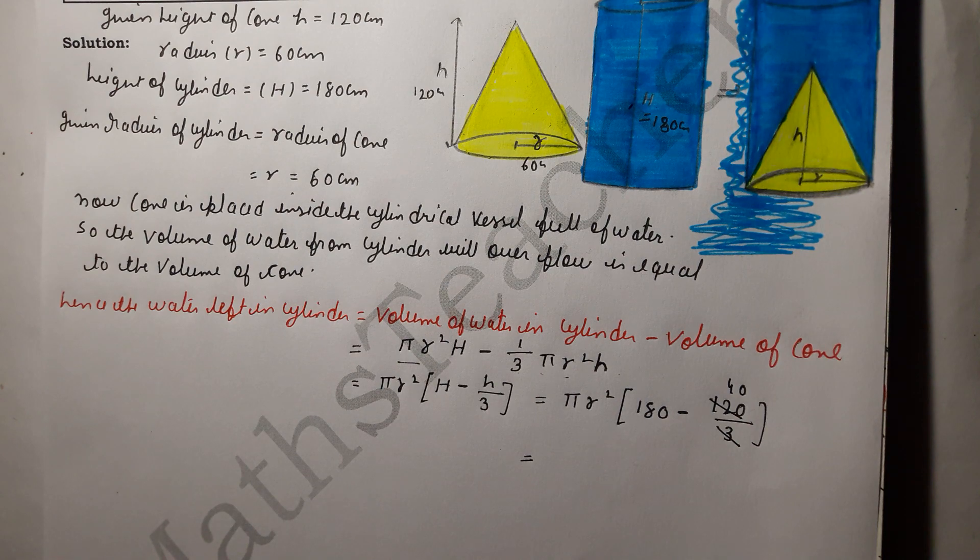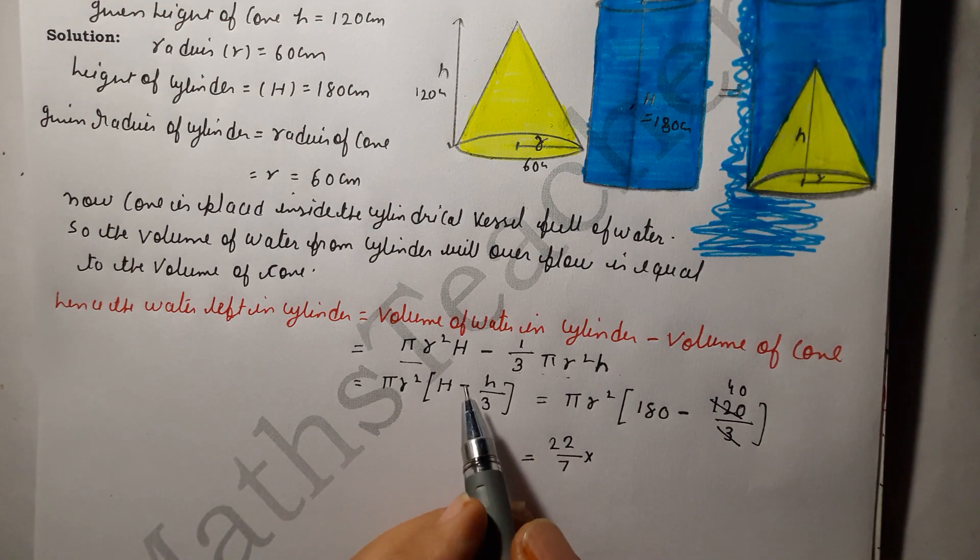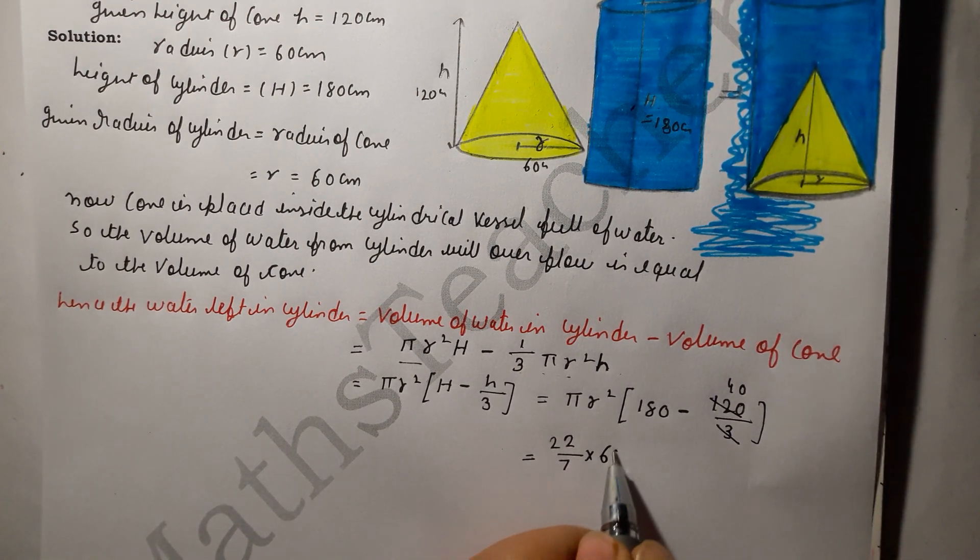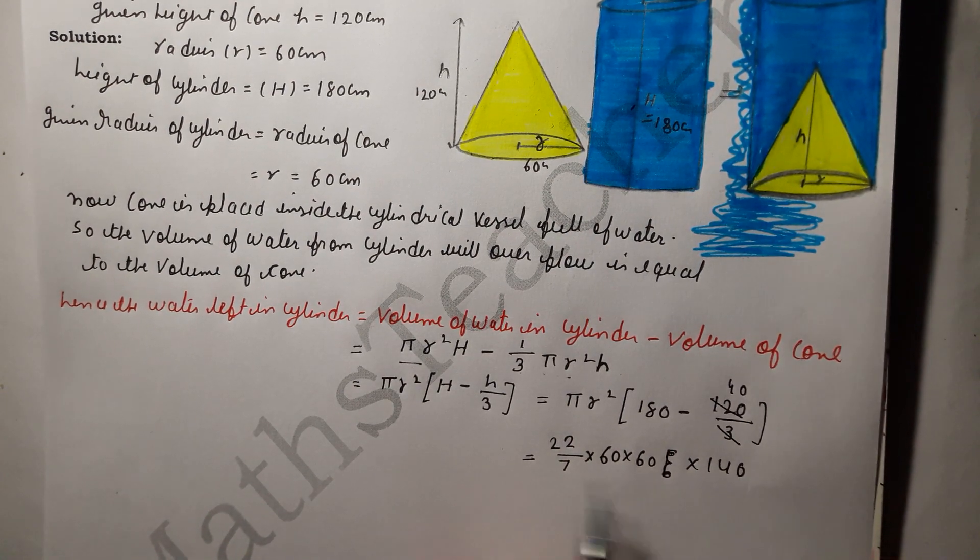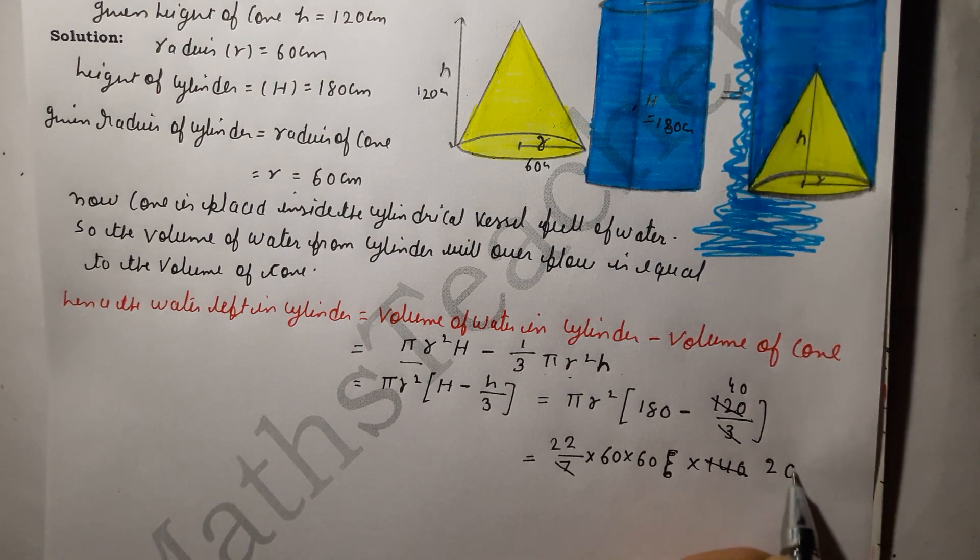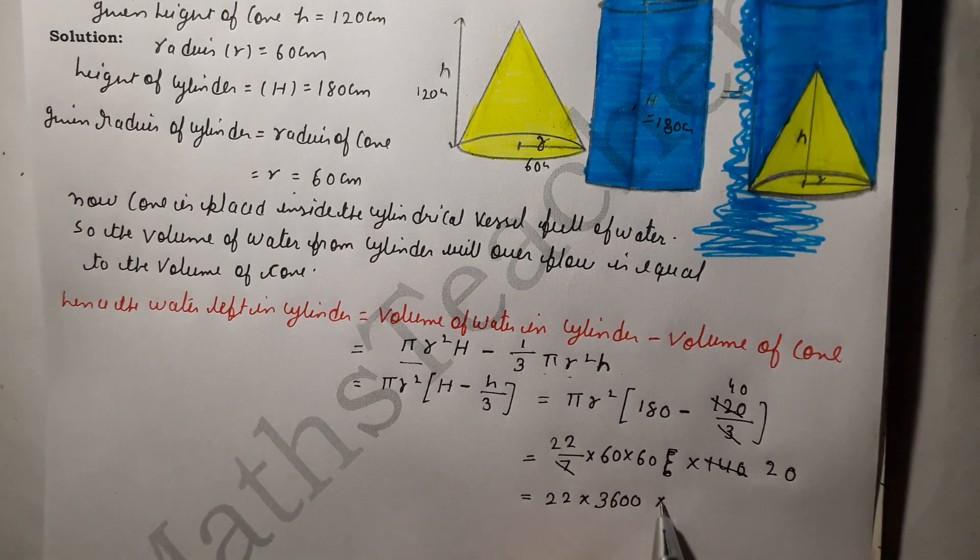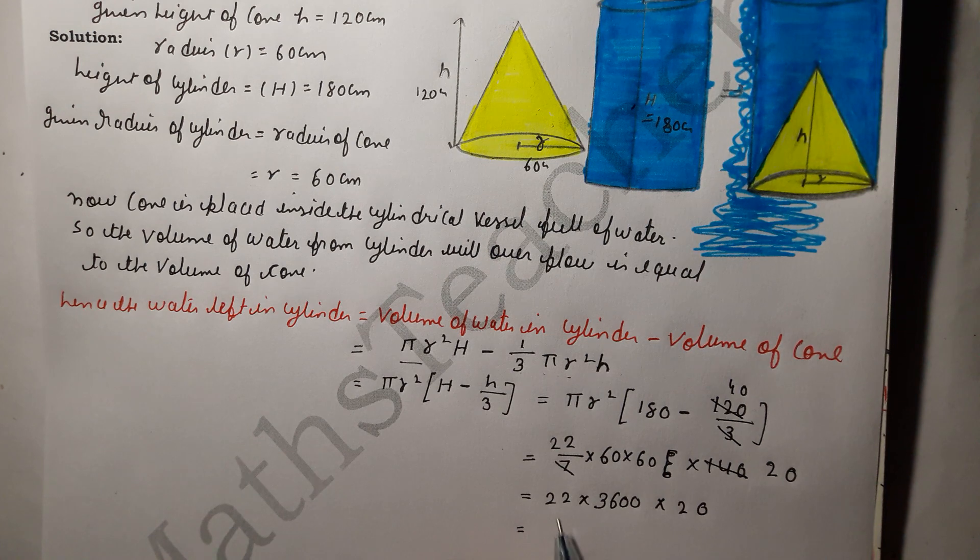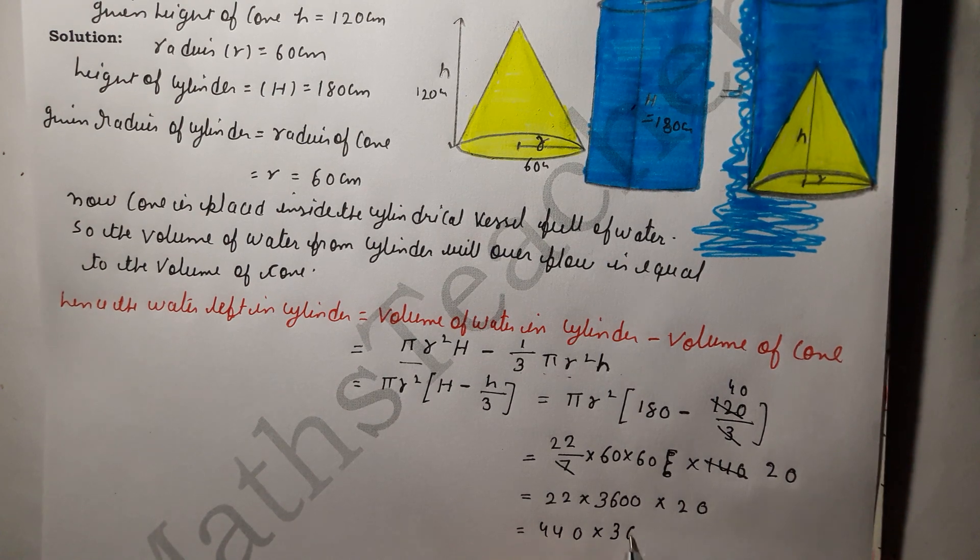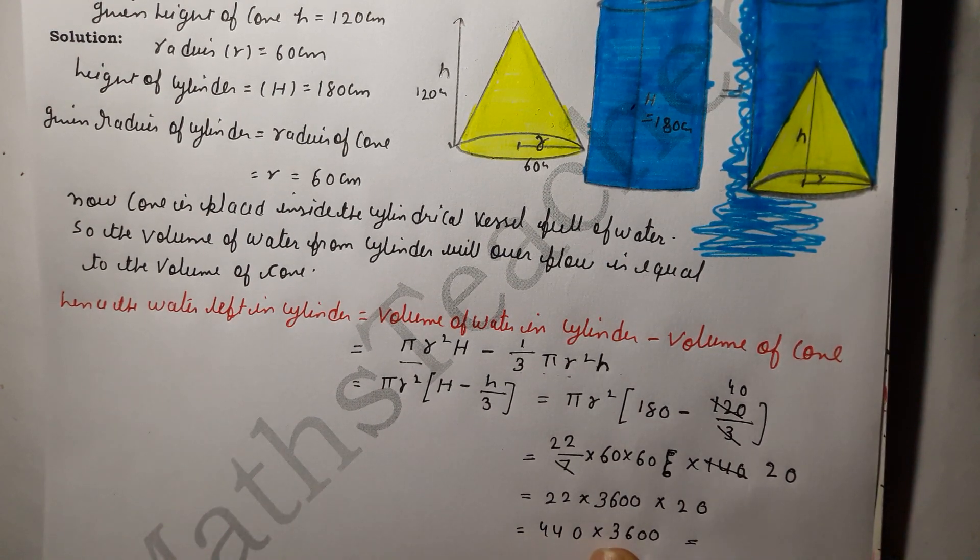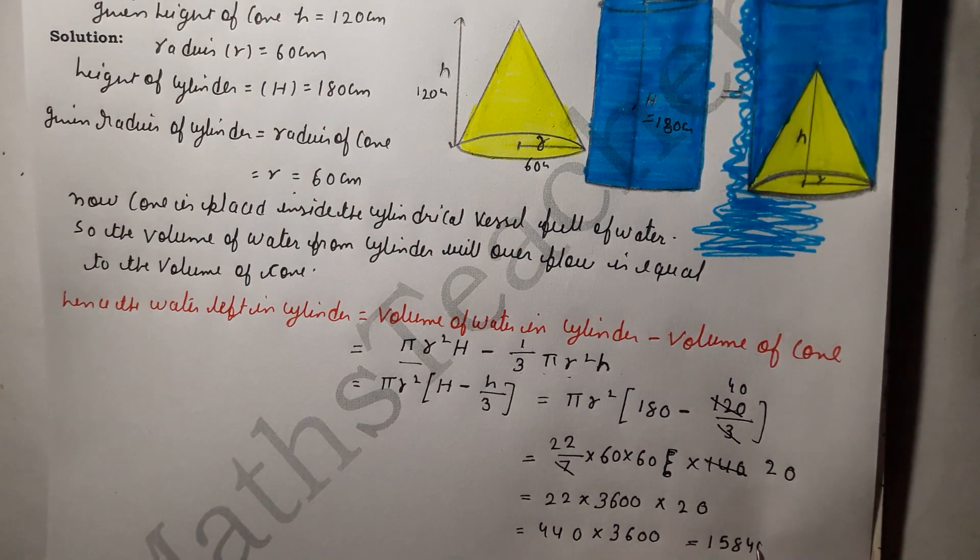Sorry power cut. Now let's put π and r value: 22/7, radius 60 into 60, 180 minus 40 gives 140. 7 cancels to give 20. Multiply 22 into 60 into 60 into 20. This will be 1584 and three zeros will be added, so 1584000.